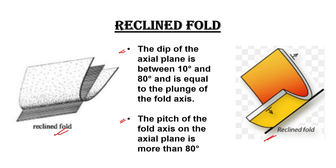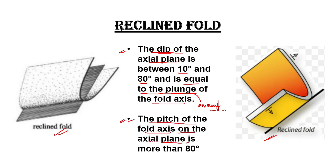So let's see the definition first. A recline fold is one in which the dip of the axial plane is between 10 degrees and 80 degrees. And this dip of the axial plane is equal to the plunge of the fold axis — the plunge amount. They are the same. The next criteria is that the pitch of the fold axis on the axial plane is more than 80 degrees, and somewhere it's written as around 90 degrees — more than 80 degrees, around 90 degrees, one and the same thing.